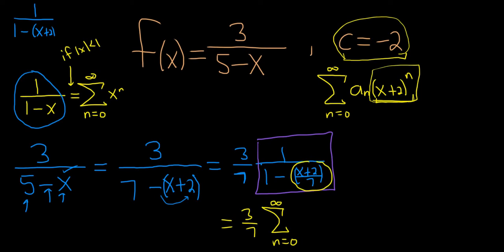And this whole thing here, this x plus 2 over 7, that's our x. So that becomes x plus 2 over 7 to the n, right? That whole thing is to the nth power. So this is equal to, let's go ahead and distribute that 3 7ths. So infinite sum, as n runs from 0 to infinity, 3 7ths, x plus 2 to the n, over 7 to the n.